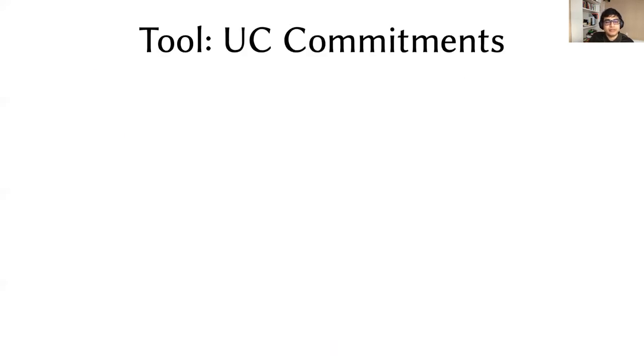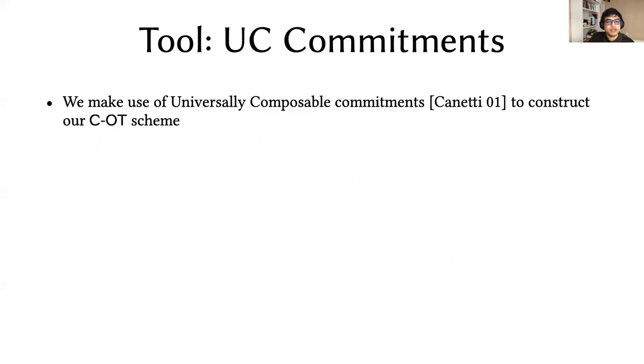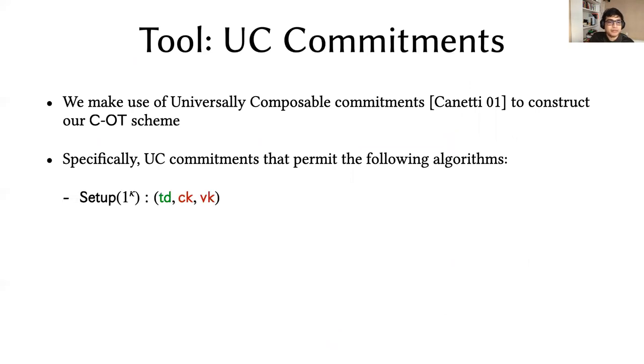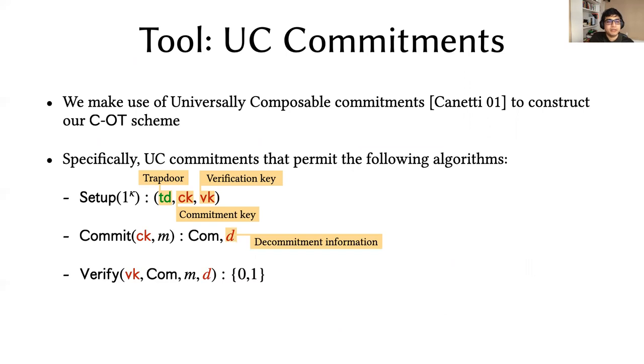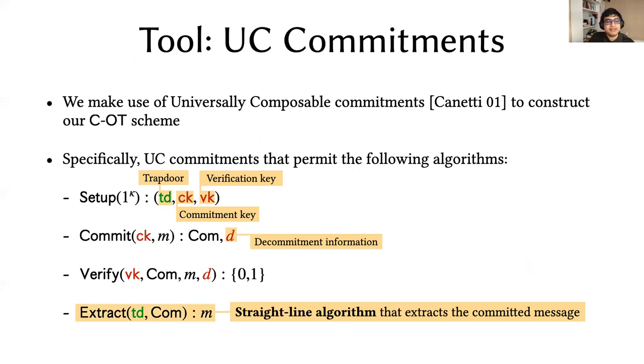We can solve this problem using universally composable commitments. Specifically, we use UC commitments that permit the following algorithms. First, a setup that produces a trapdoor, a commitment key, and a verification key. A commitment algorithm that produces a commitment and some decommitment information, and of course, a method to verify this. And finally, a straight-line algorithm that extracts the committed message, given the trapdoor. Conventionally, this extractor is simply a proof artifact. But in our case, we're actually going to execute this proof artifact in our construction.